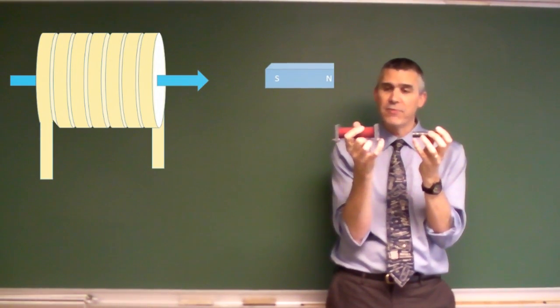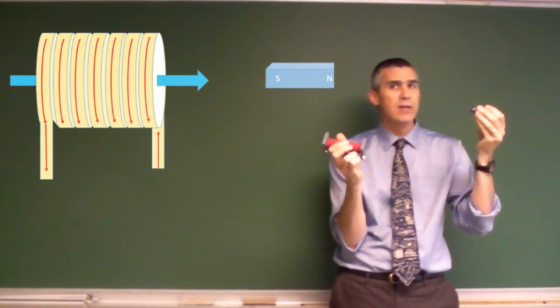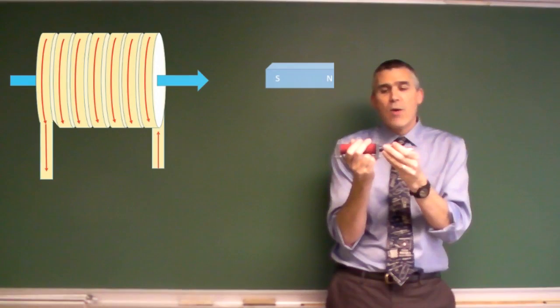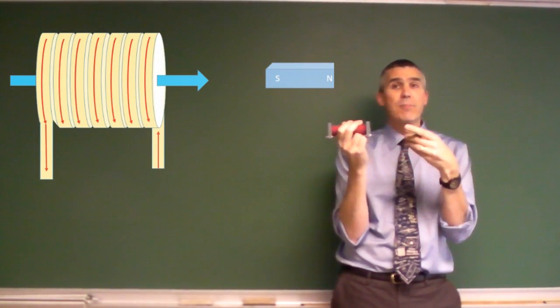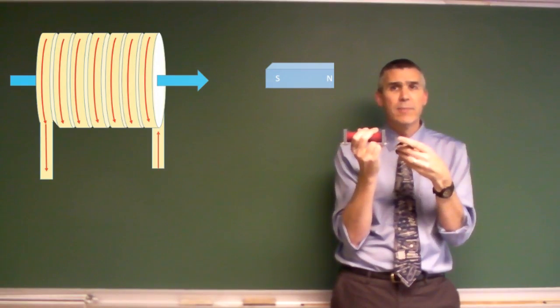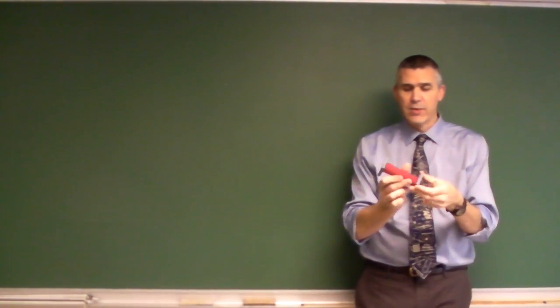So the north end of that magnetic field here will try to prevent the removal of the south end of this magnet. And so when I pull the south end out, a north magnetic field, north magnetic polarity will be generated here. And that's how I can figure out the direction of current around this coil.